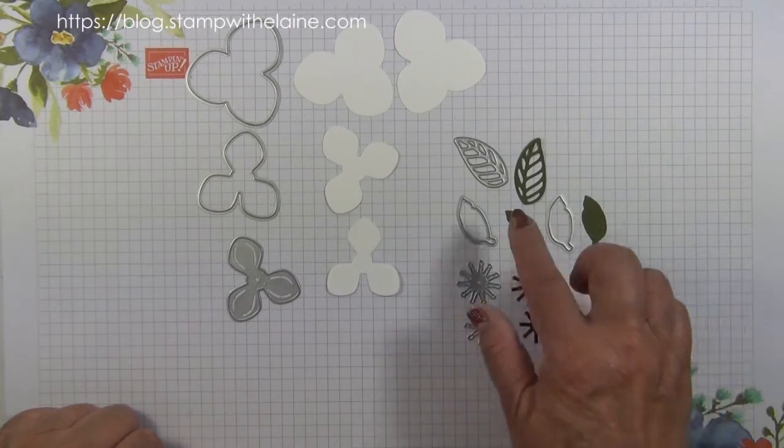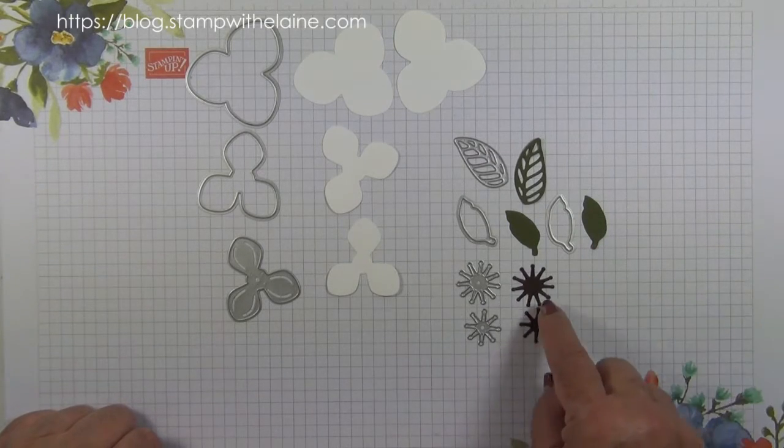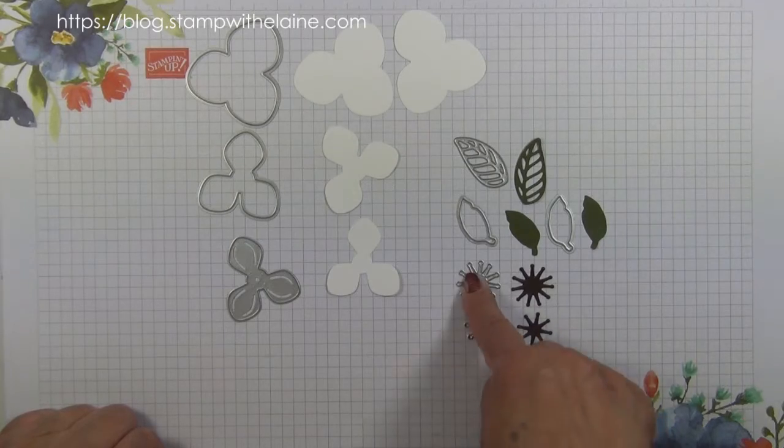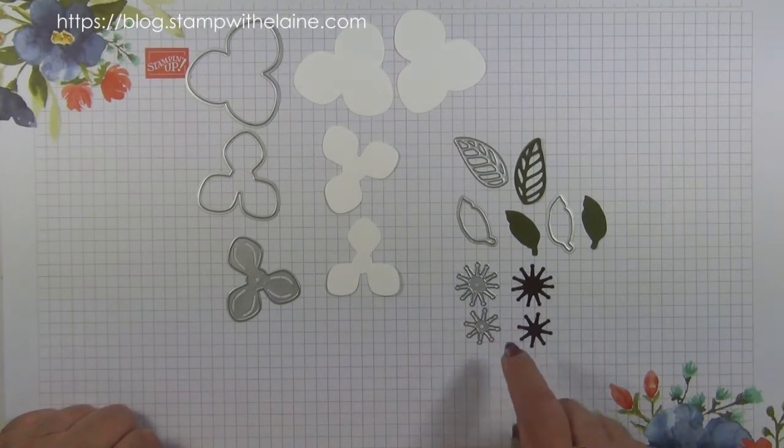You need Mossy Meadow cardstock scrap to cut out one large leaf and two solid leaves. And from the Early Espresso scrap, you cut one large flower center and one small flower center.